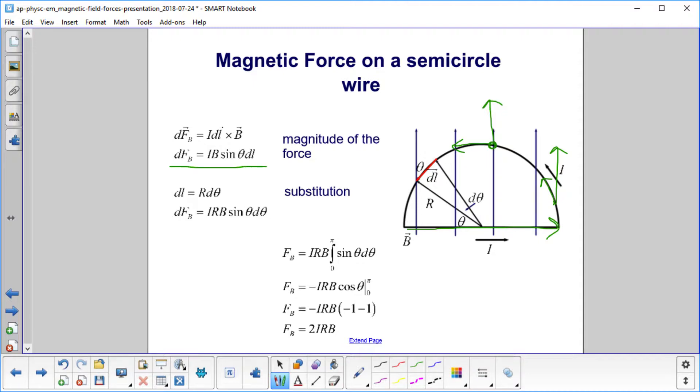Because we're interested in finding the magnitude here. We already know the direction, but we need to know the magnitude. Whenever you have a cross product, you can just take the magnitudes. So you've got I, DL, and B, and then the sine of the angle between B and DL. So we have dF_B equals IB sine theta dL.